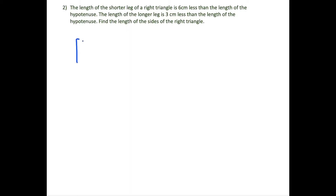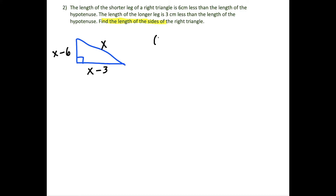For the second question, we're dealing with a right triangle — not isosceles, with a short leg and a long leg. The shorter leg is six centimeters less than the hypotenuse, so if the hypotenuse is x, the short leg is x minus 6. The longer leg is three centimeters less than the hypotenuse, so that's x minus 3. Our goal is to find the lengths of all three sides.